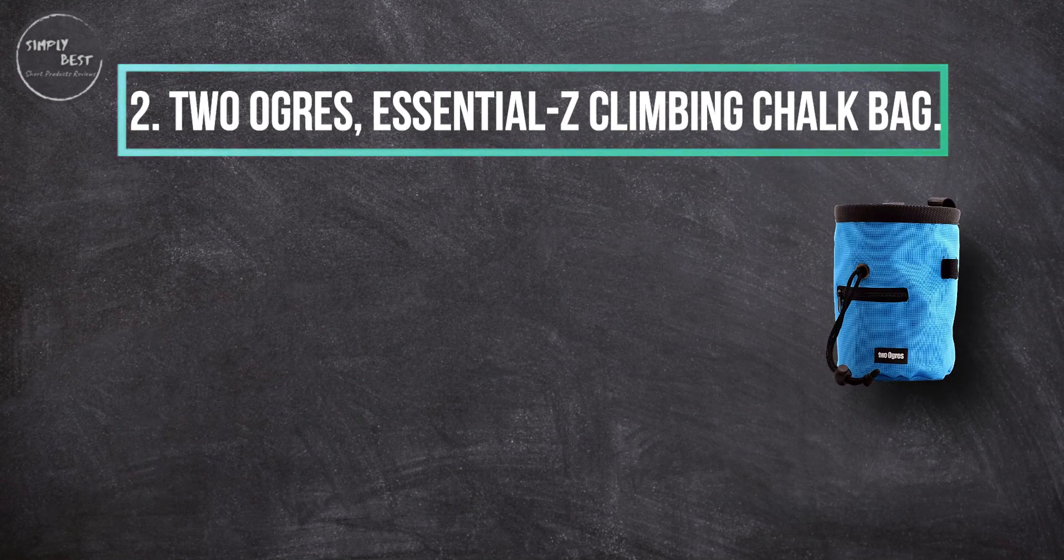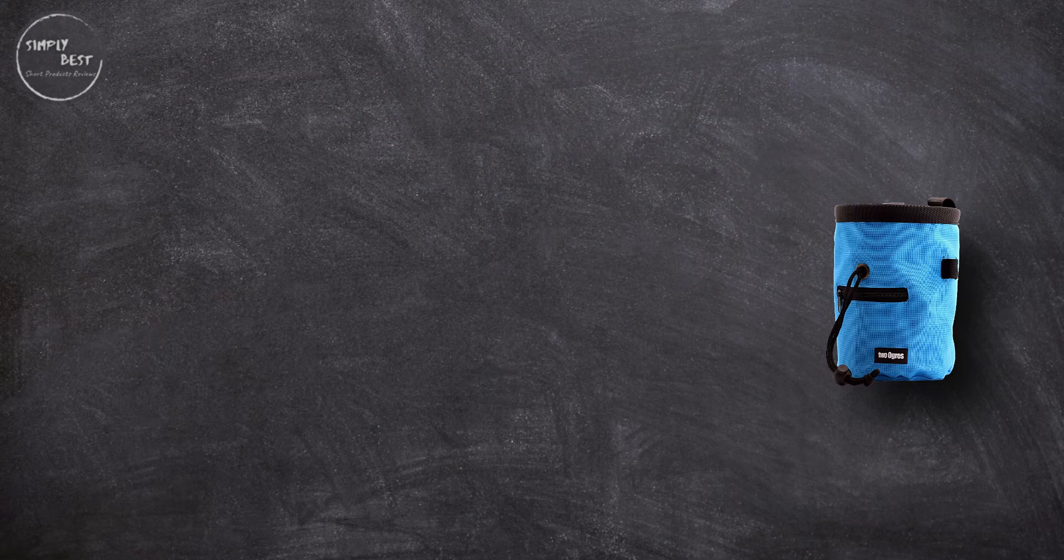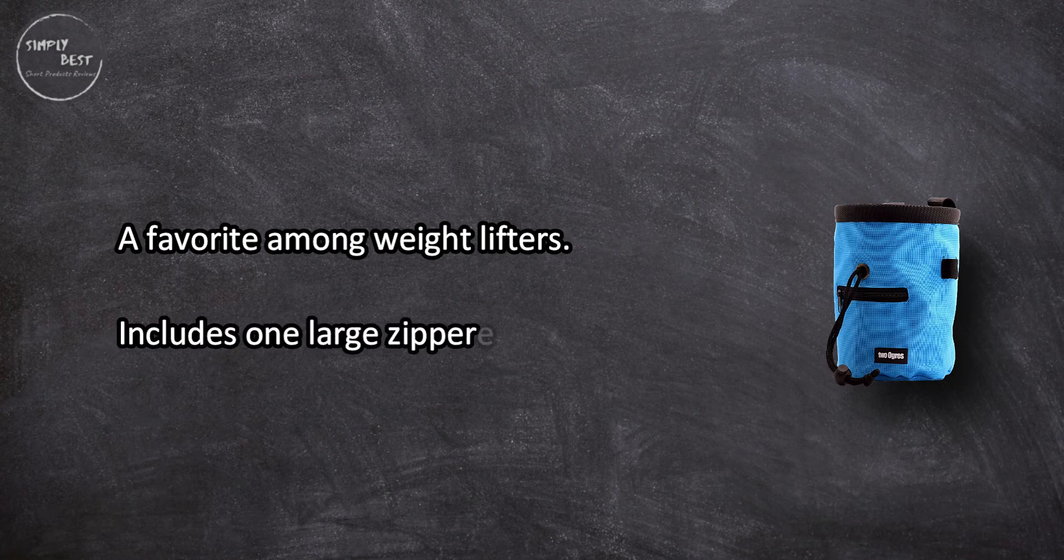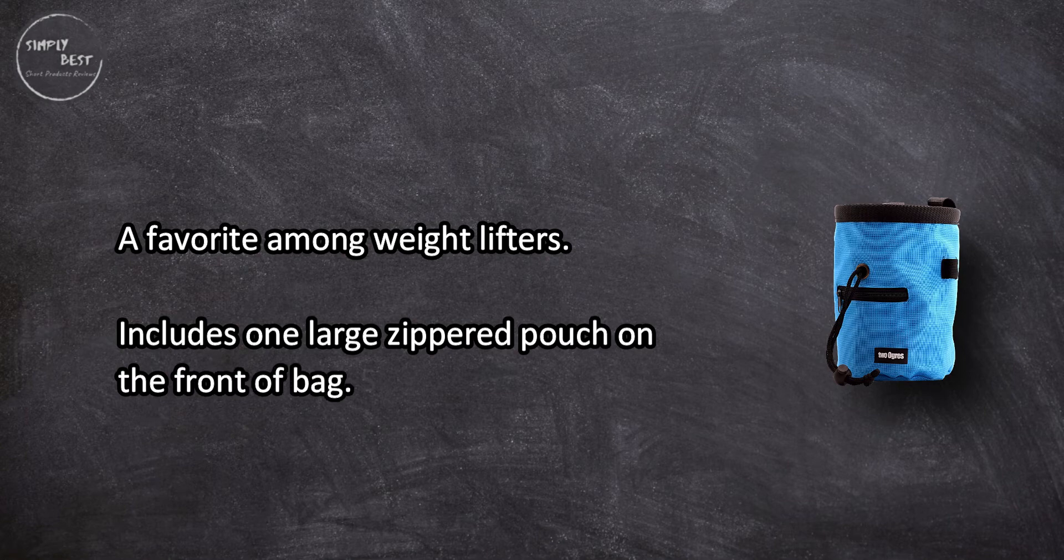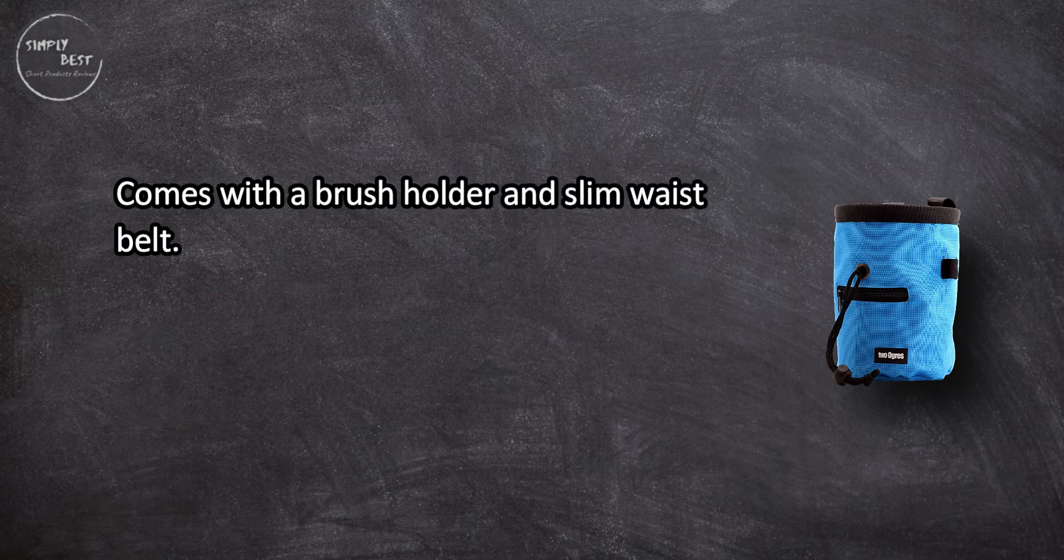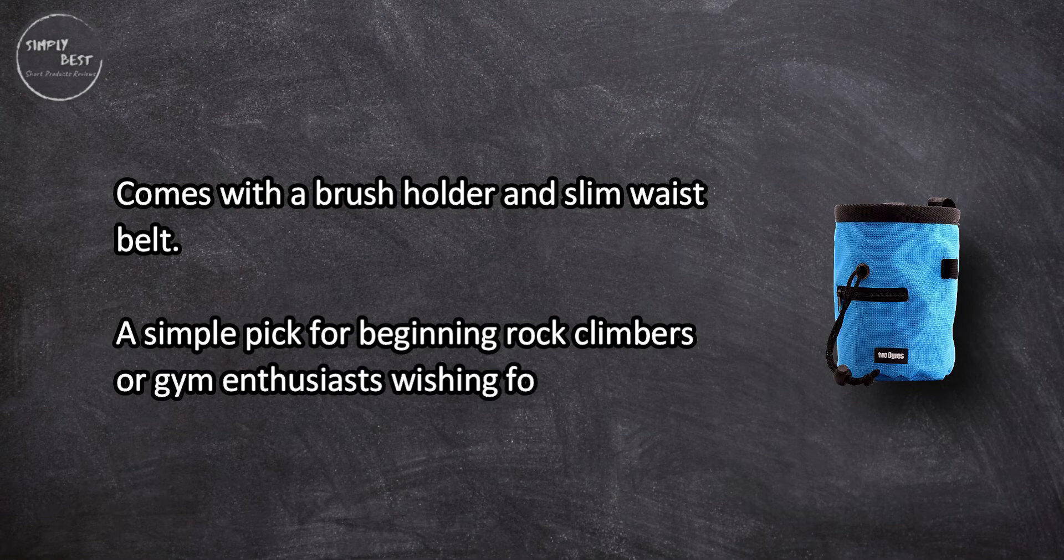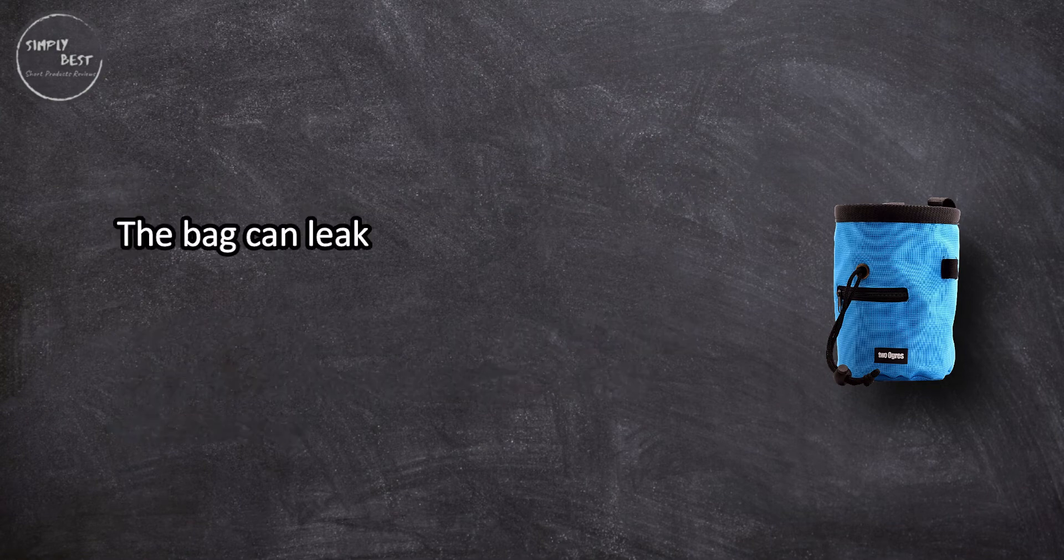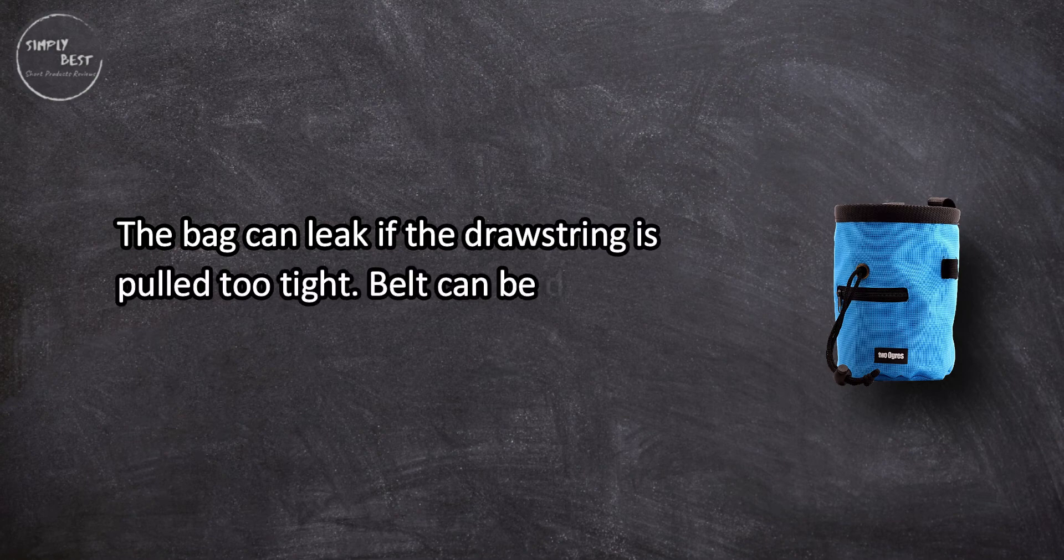At number two: Two Ogres Essentials ED Climbing Chalk Bag, a favorite among weightlifters. Includes one large zipper pouch on the front or back. Stands upright by itself, comes with a brush holder and slim waist belt. A simple pick for beginning rock climbers or gym enthusiasts wishing for a cost-effective bag. The bag can leak if the drawstring is pulled too tight.